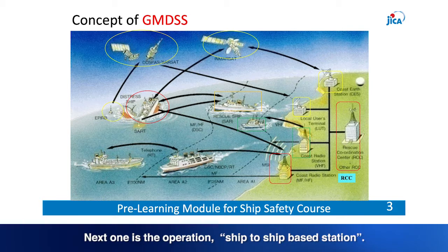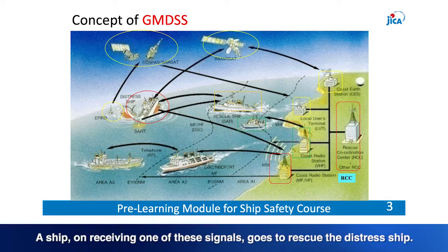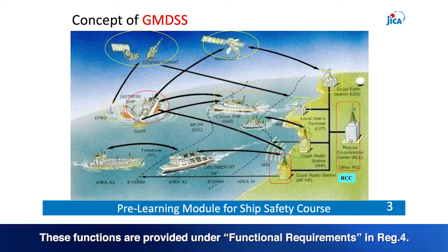Next is the Operation Ship-to-Ship Based Station. The distress alert is transmitted by MF/HF or VHF/DSC to ships in the area. A ship, on receiving one of these signals, goes to rescue the distress ship. These functions are provided under functional requirements in Regulation 4.